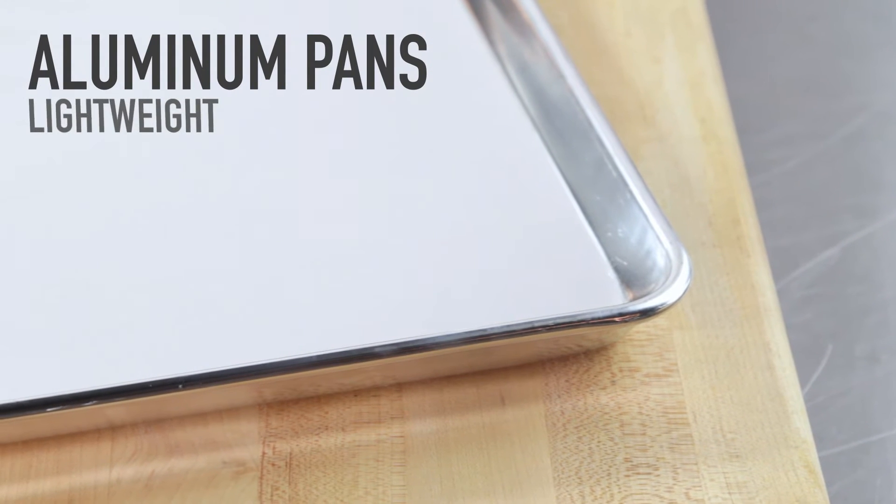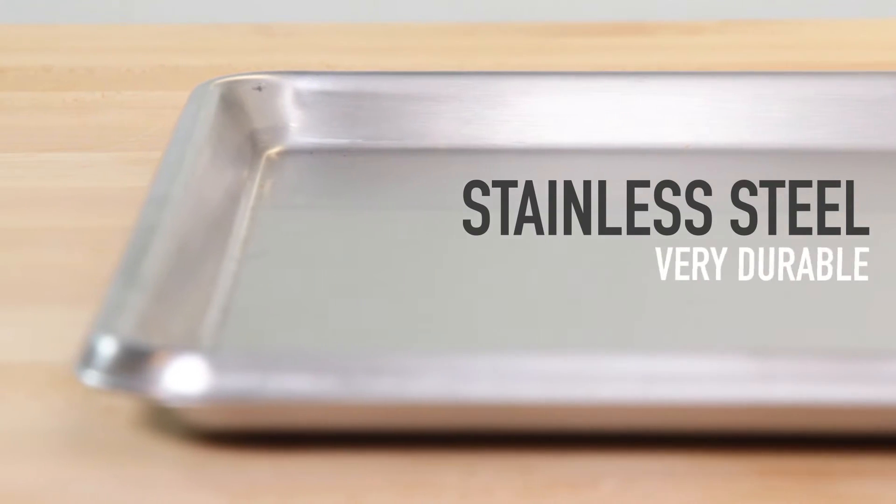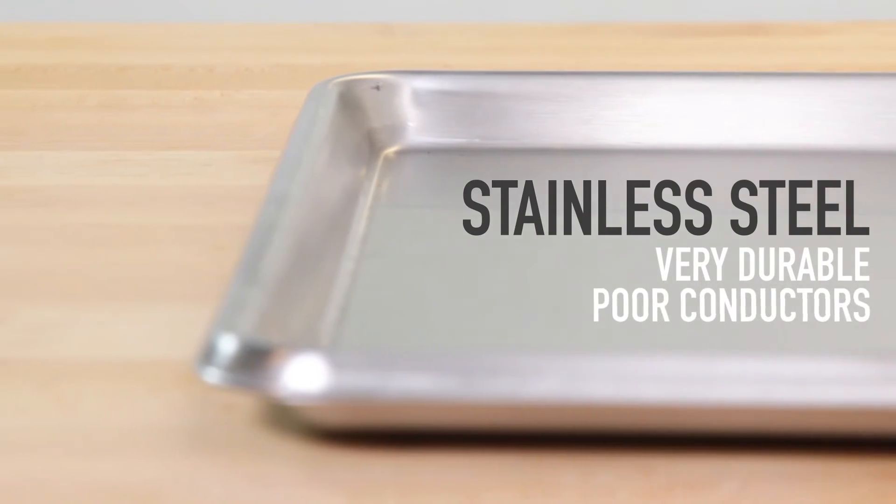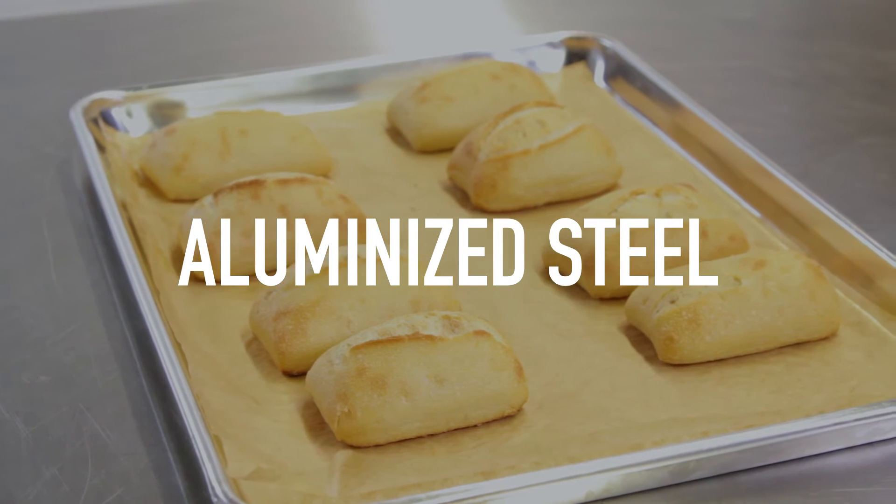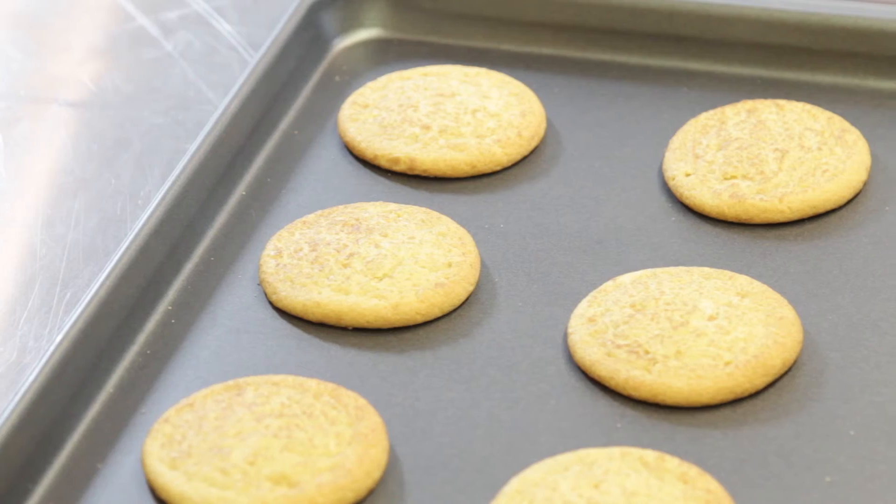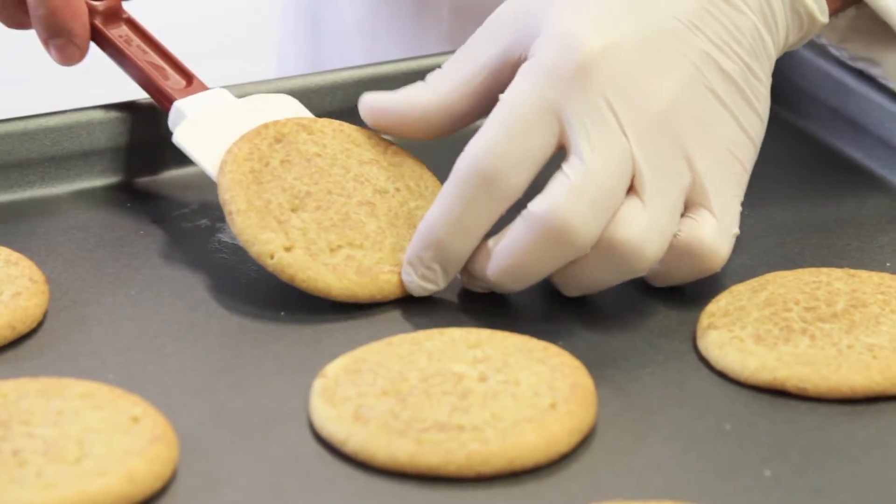Aluminum bun pans are lightweight and great heat conductors. Stainless steel pans are the most durable, but are not the best conductors of heat. To combine the great qualities of both materials, try an aluminized steel sheet pan. Some pans also feature a convenient non-stick coating, so you can easily release foods from the pan.